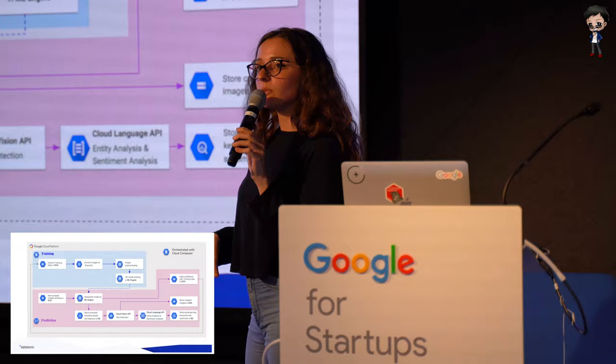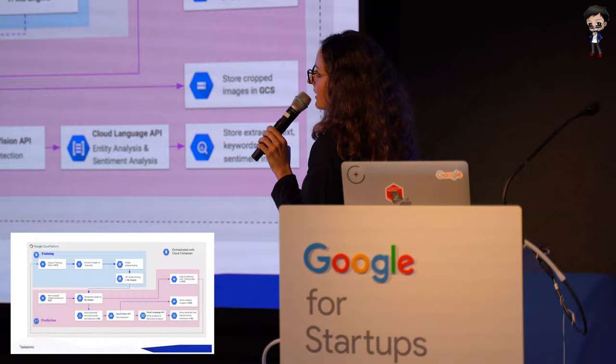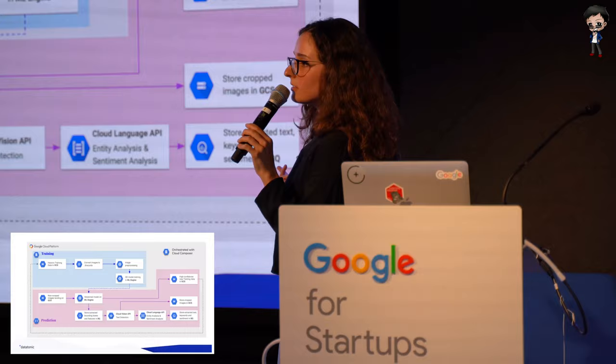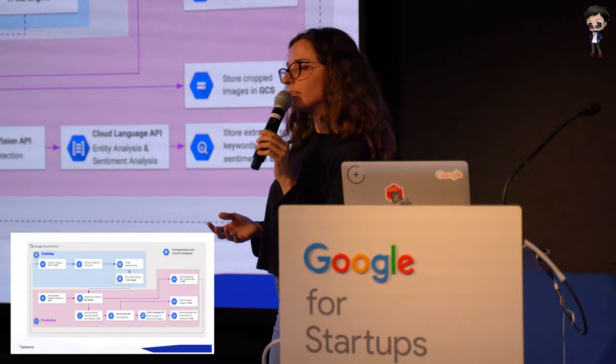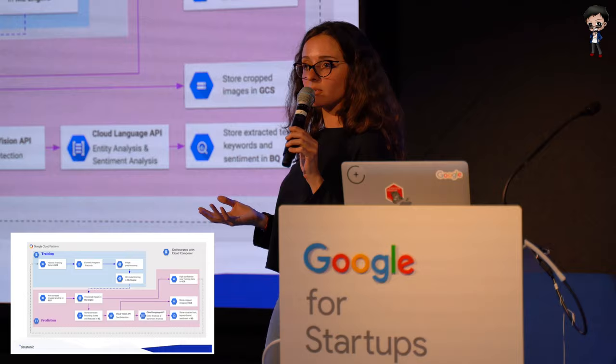What it does is take training data stored on Google Cloud Storage, compress these images to TFRecords — the best format for the TensorFlow model. Then we use Google Cloud ML Engine to do the image pre-processing, train the model, and then also serve the model if it has good enough performance. This leads us to the prediction pipeline, where new images keep arriving on Google Cloud Storage. Cloud Functions allows you to react to this trigger event, so every time a new image lands, it sends the prediction request to ML Engine and gets the bounding boxes for that screenshot.